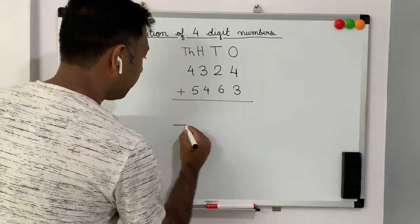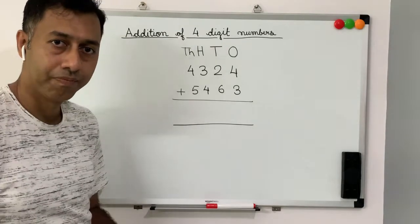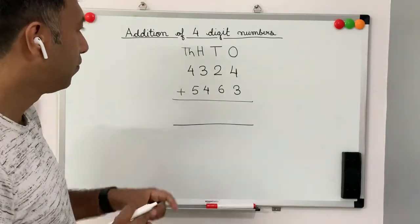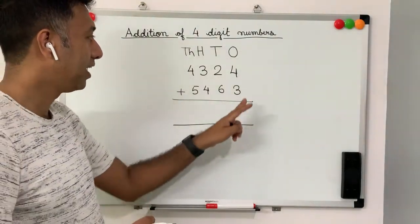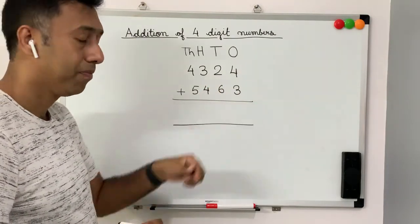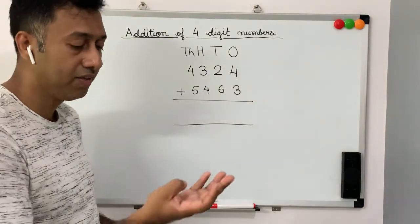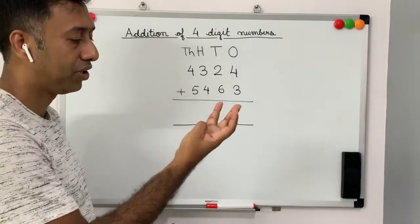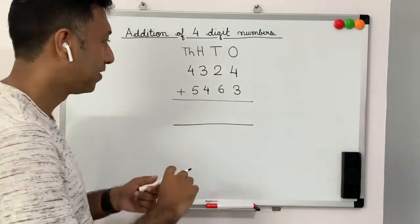Now let's try to find out the result. First, we will always start adding from the ones digit. So 4 plus 3, it's okay to use your fingers. 4 plus 3 is 7.